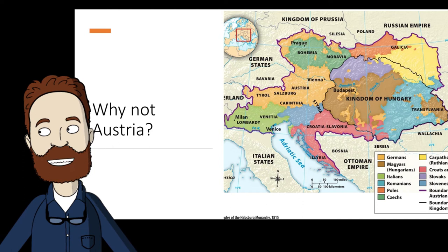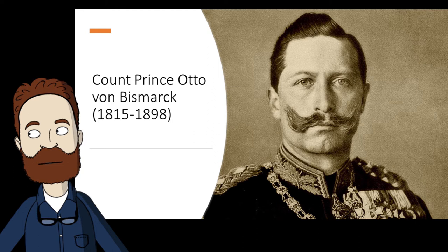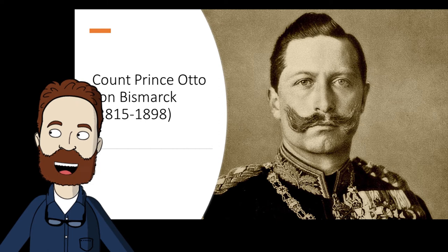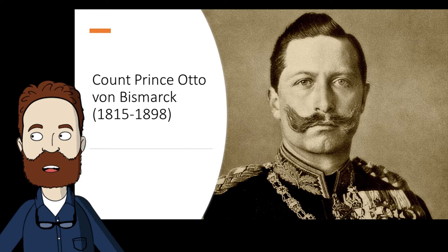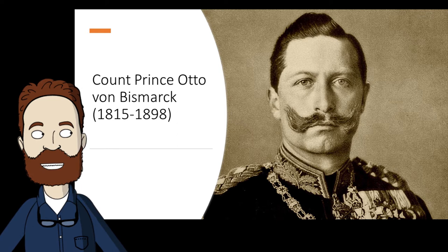Count Prince Otto von Bismarck became that politician. As we look at famous Germans in history — Charlemagne, Luther, Hitler — Bismarck should be on that list as well. Born into the Junker class of landed aristocrats and educated in western Prussia, the von in his name signifies this aristocratic lineage. After a session at university, he was described as an indifferent student but a capable duelist and rake.